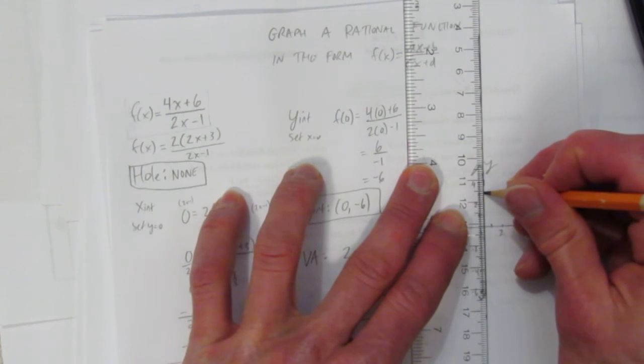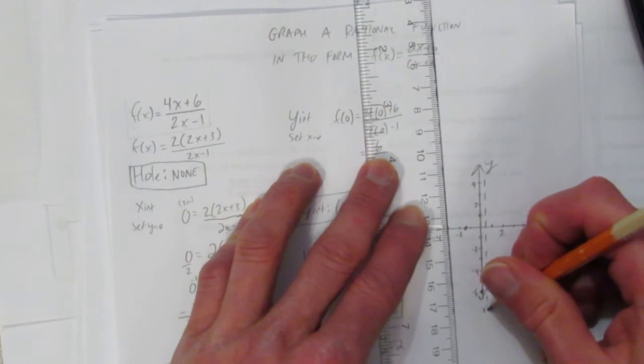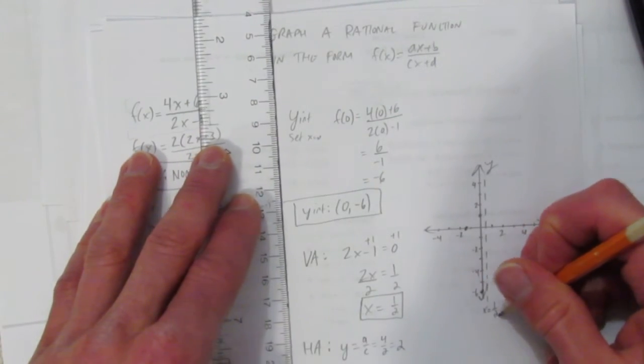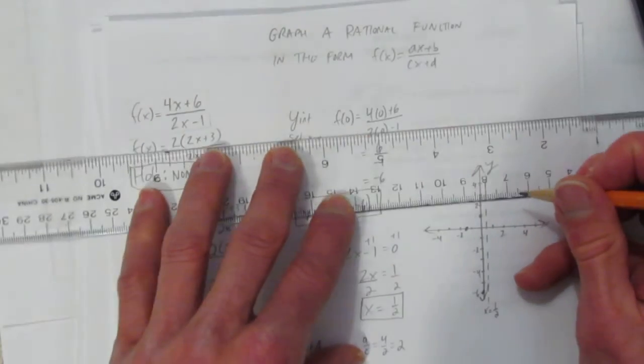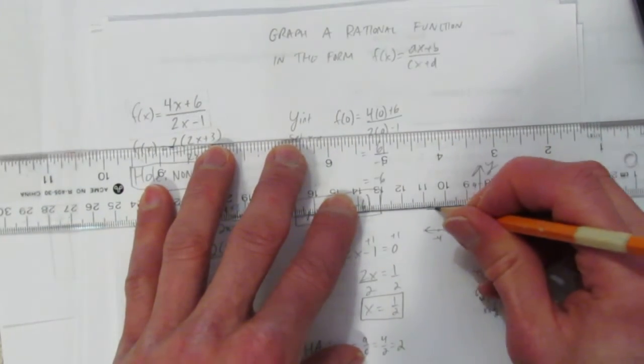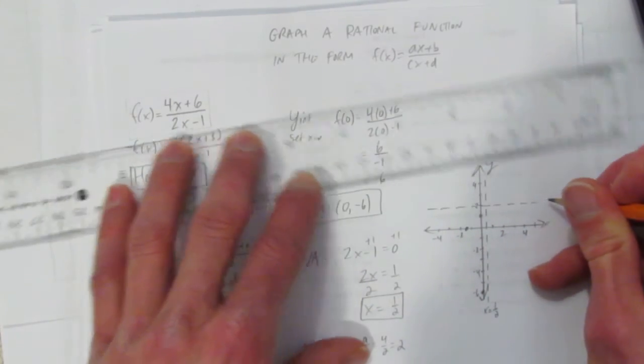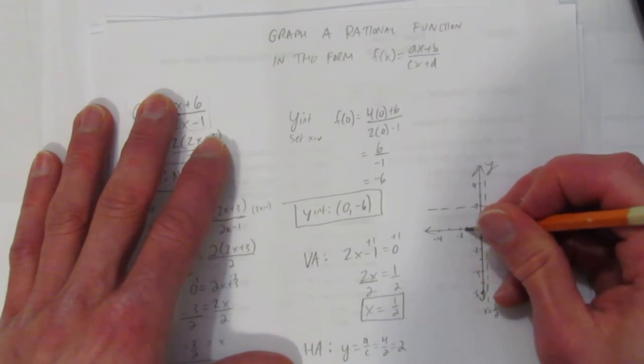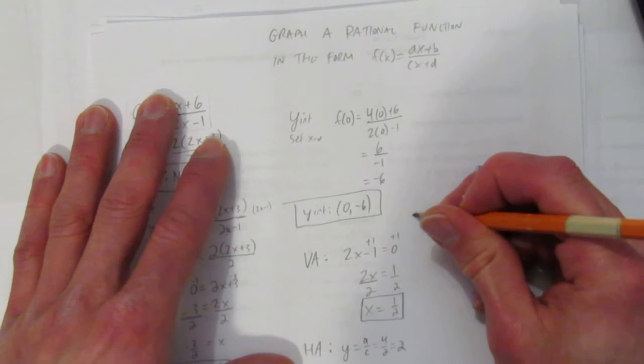And then label it. This is x=0.5. And then the horizontal asymptote is at y=2. Let's put that on a dashed line. This is y=2. Okay, we have to pass through these two intercepts. I know it has to close in on this asymptote.